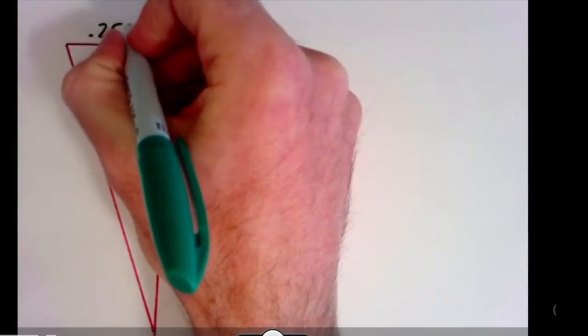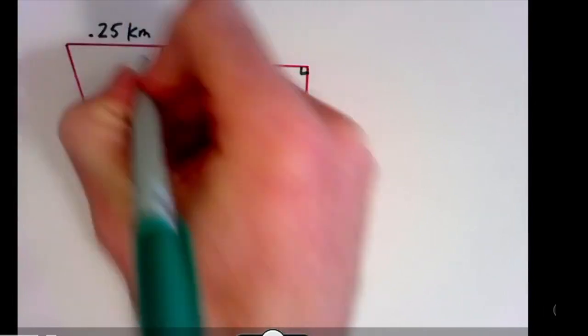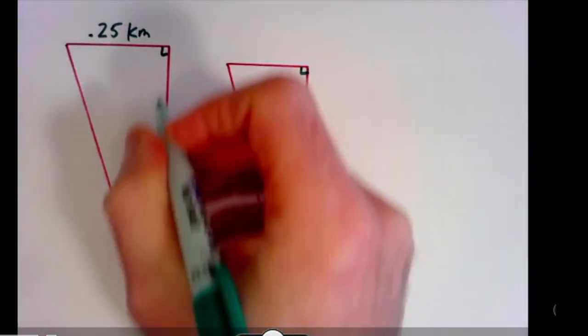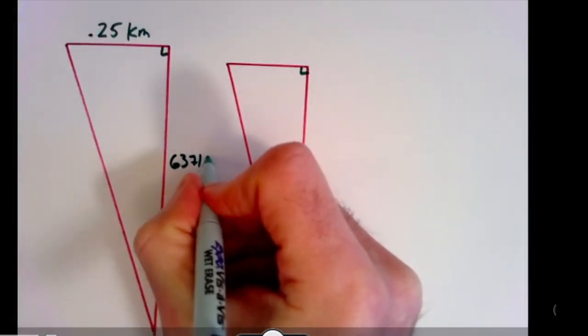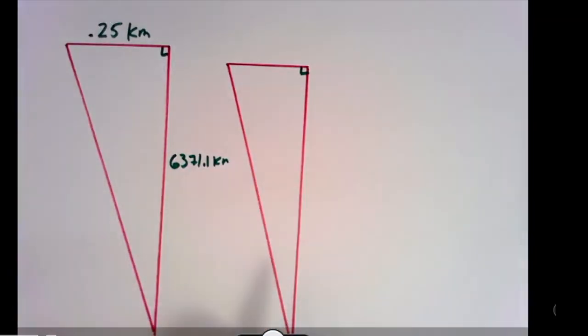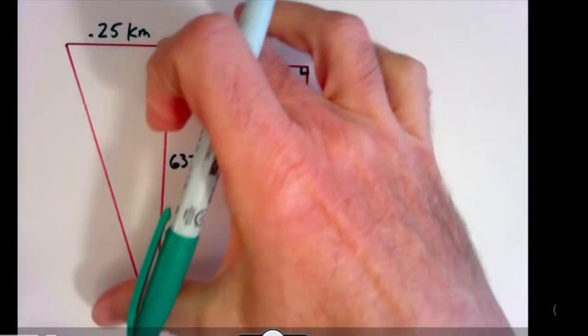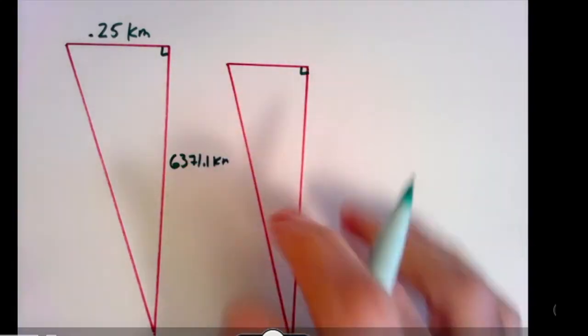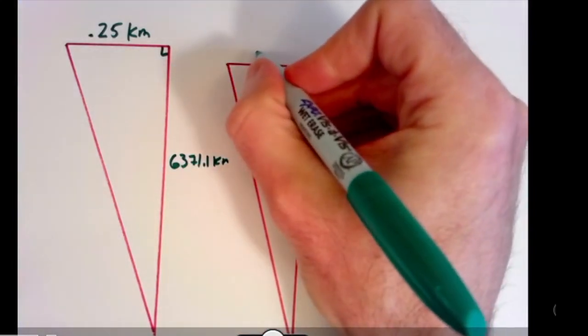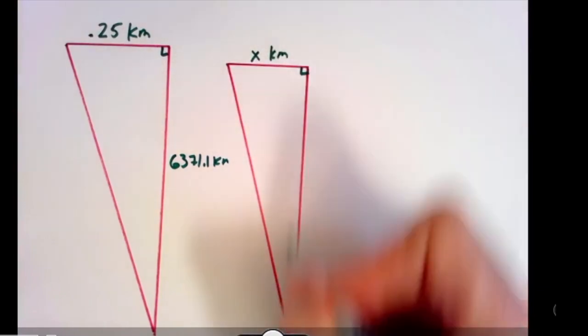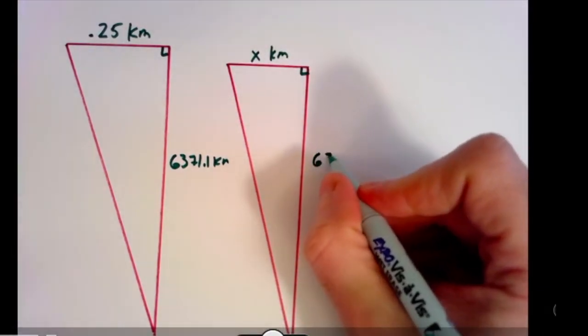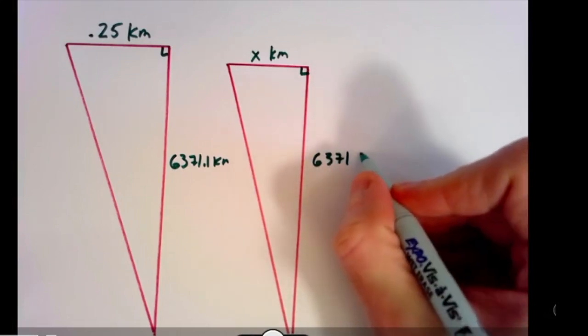So this triangle on the left is to the top of our building. That's that quarter kilometer there. And then the height is going to be 6,371.1 kilometers. That point one is including the height of the building on top of the earth. This other triangle, which goes to the base of the building, we don't know how long the base is, but the radius of the earth is 6,371 kilometers.